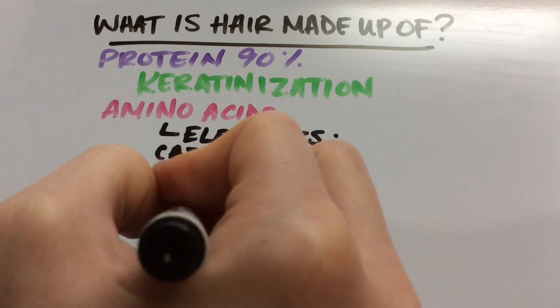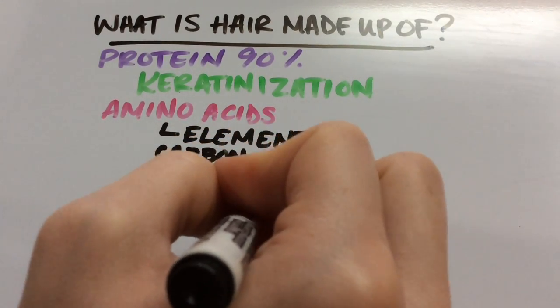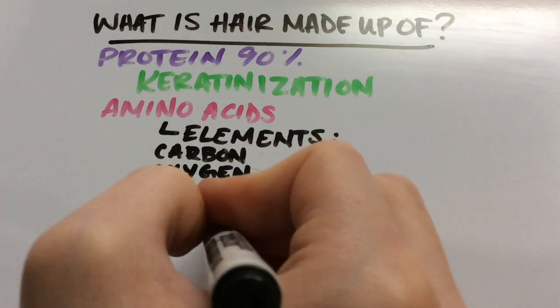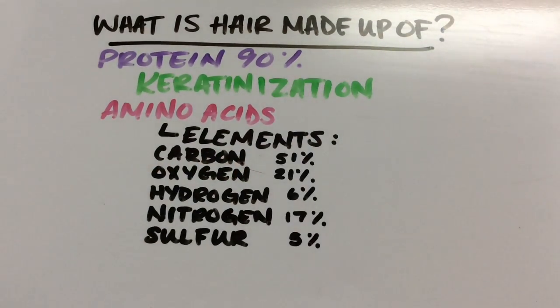In normal, healthy hair, the percentages are: 51% carbon, 21% oxygen, 6% hydrogen, 17% nitrogen, and 5% sulfur.